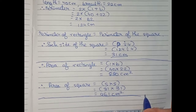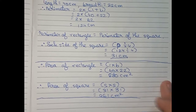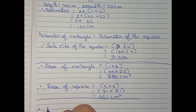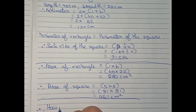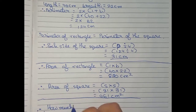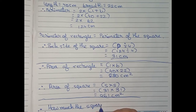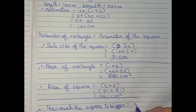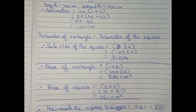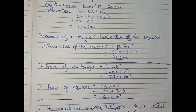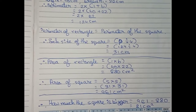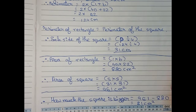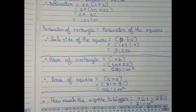From this we can clearly see that the square encloses more area than the rectangle. To find by how much the square is bigger, we calculate 961 minus 880, which gives 81 centimeter square. So the square is bigger than the rectangle by 81 centimeter square.